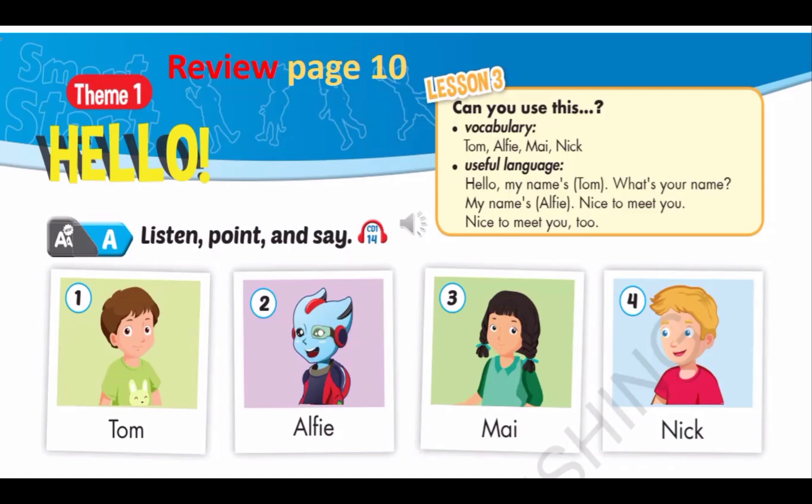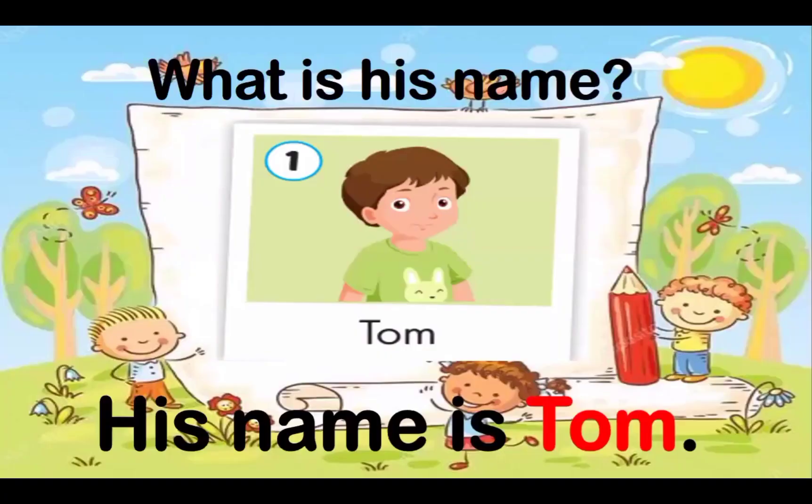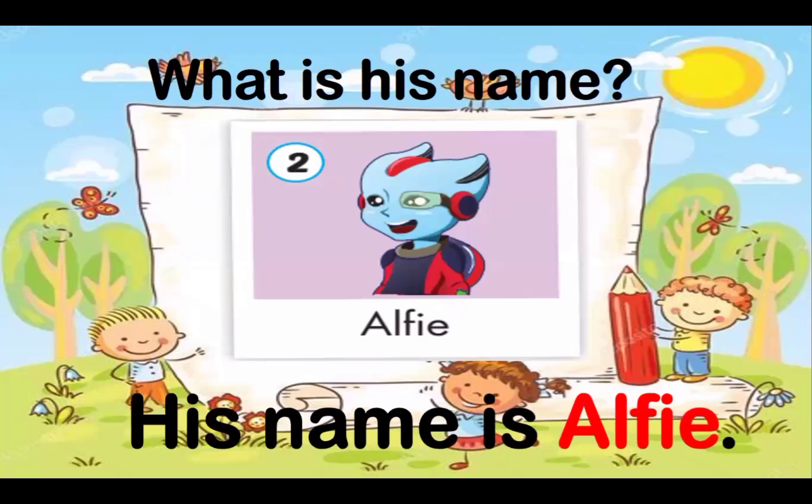Next, we are going to review Q&A with little helper LJ. Are you ready? Yes we are. Okay, let's do this. Number one: what is his name? His name is Tom. Great stuff. Number two: what is his name? His name is Alfie.